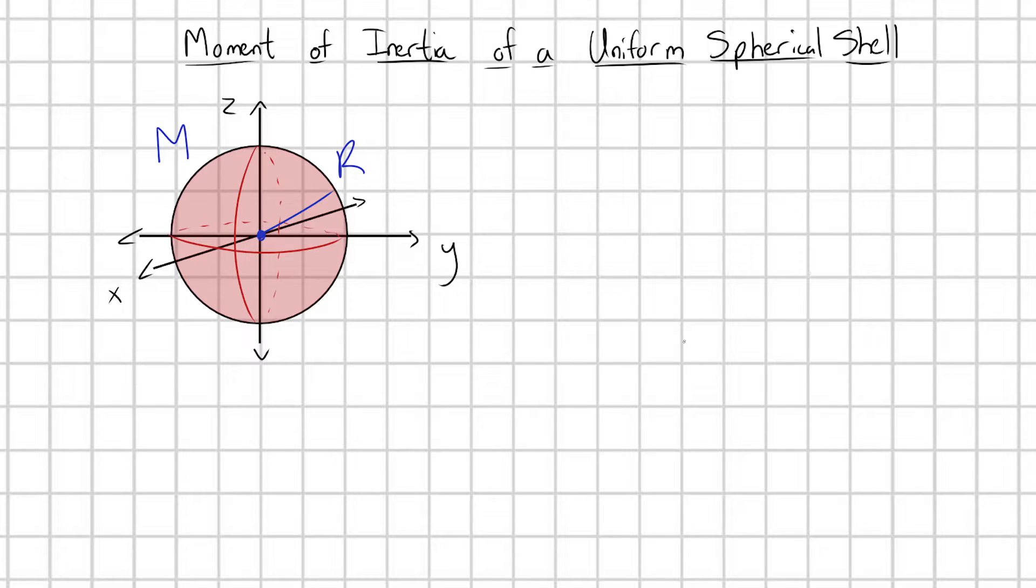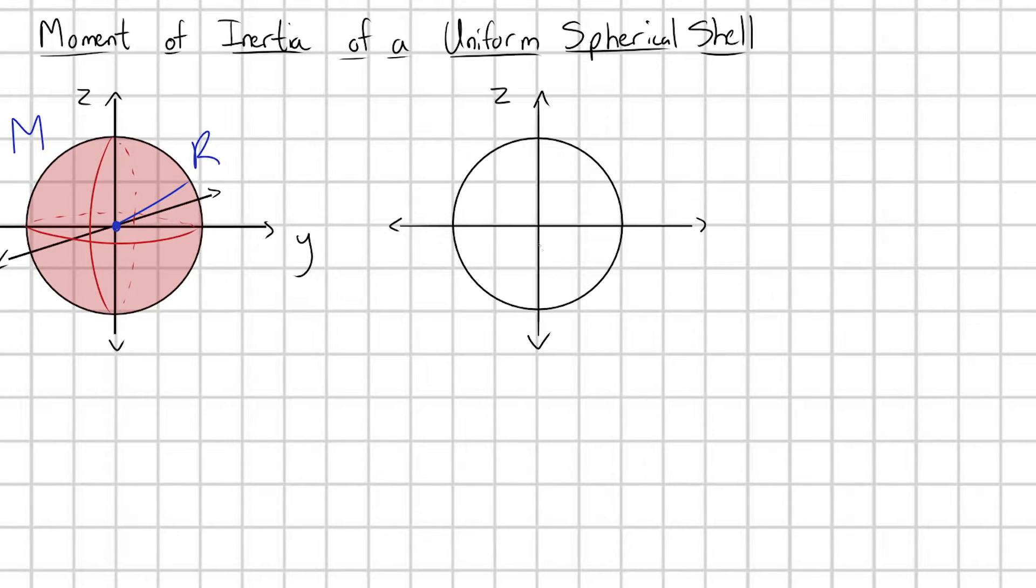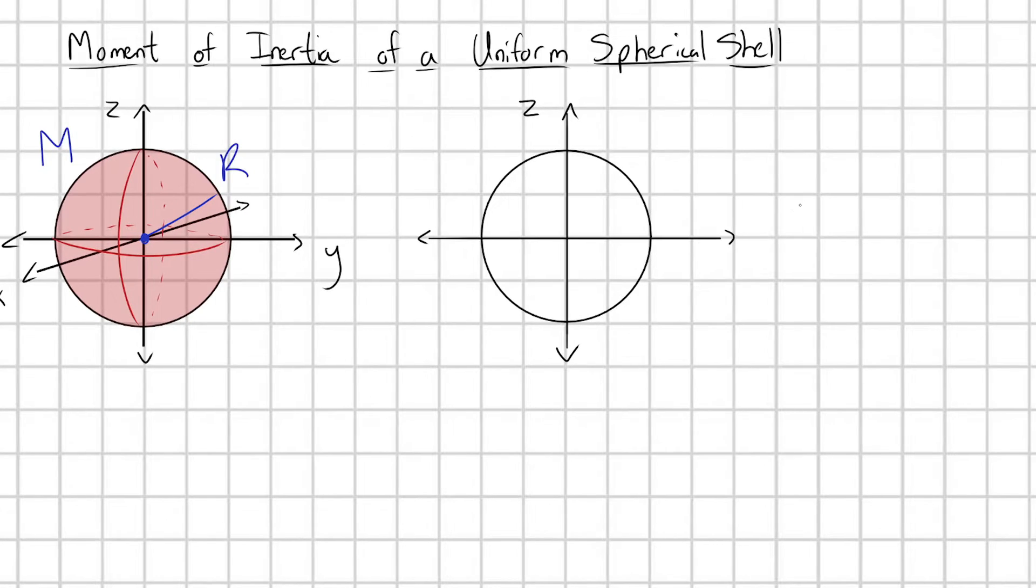So the way that we're going to calculate this moment of inertia, I'll show a simpler picture here on the right which we'll actually use. We're going to exploit our knowledge of moment of inertia of a simpler object. What I'm suggesting is that this spherical shell we can really think of as just a bunch of infinitesimal rings.